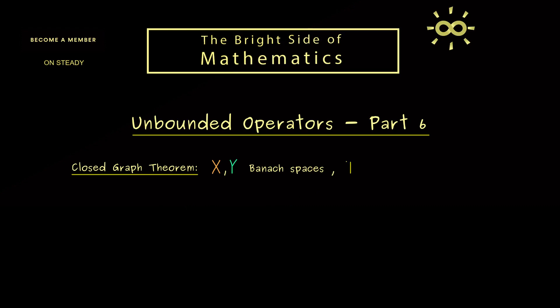But let's first see what we have here. Namely, we have our linear map T here with the domain D(T) and usually we just call it an operator. But now we need a little bit more. More precisely we want that the domain of T is a closed set in X.